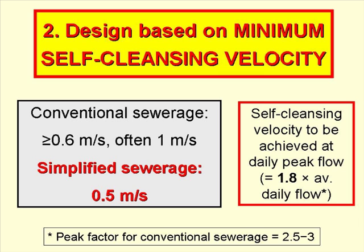The minimum self-cleansing velocity that we use for simplified sewerage, and has been successfully used in Brazil for a number of years, is 0.5 metres per second, whereas with conventional sewerage it is usually above 0.6 metres per second and sometimes as high as 1 metre per second.